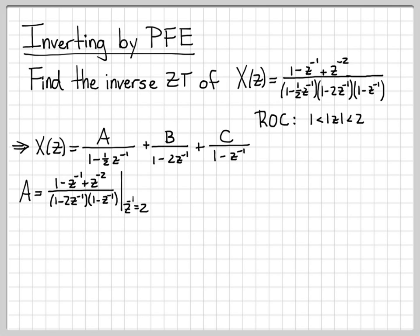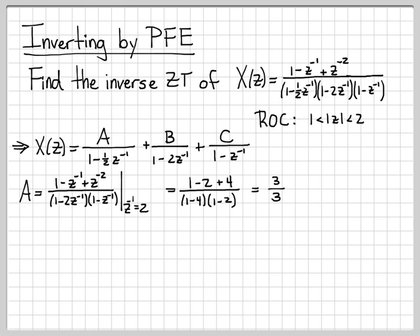I need to evaluate the remaining expression at the point where (1 minus one-half z⁻¹) equals zero. If z⁻¹ equals 2, then one-half times 2 is 1, and 1 minus 1 is zero. Plugging z⁻¹ = 2 in: the numerator gives 1 minus 2 plus 2² = 3. The denominator gives (1 minus 2·2)(1 minus 2) = (negative 3)(negative 1) = 3. So a = 3/3 = 1. We've solved for a by choosing a convenient point in the z plane.